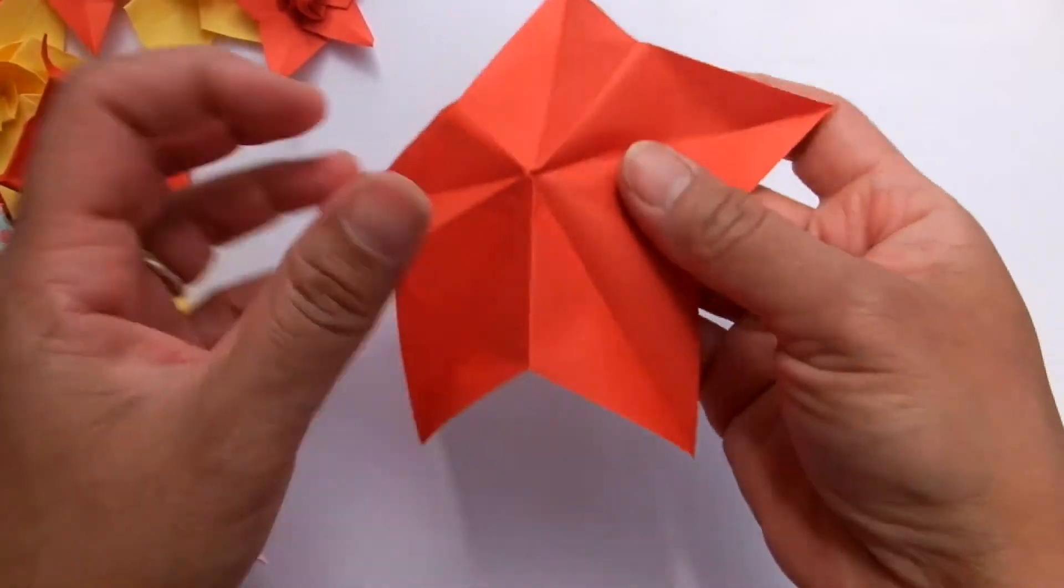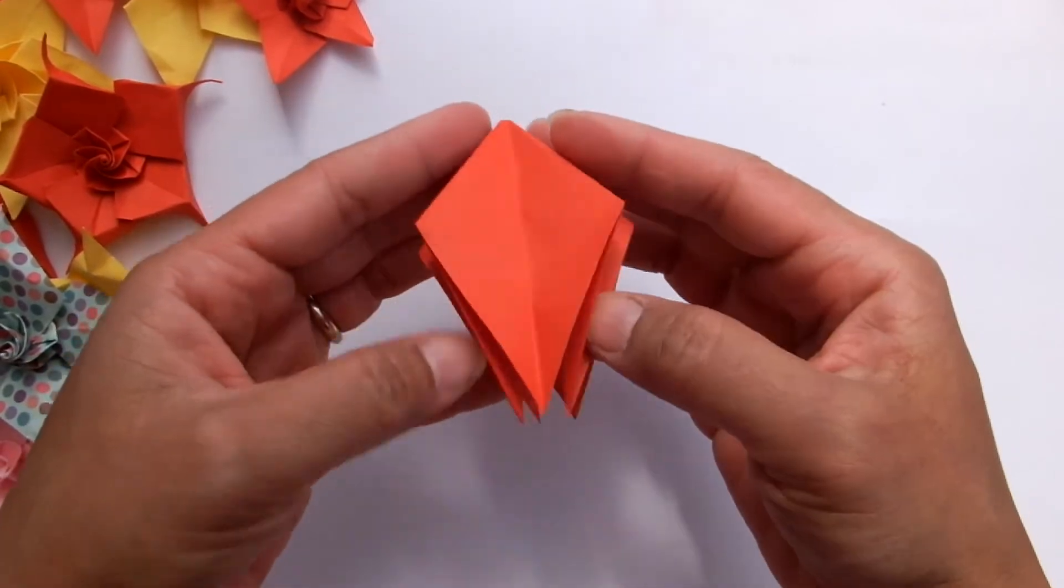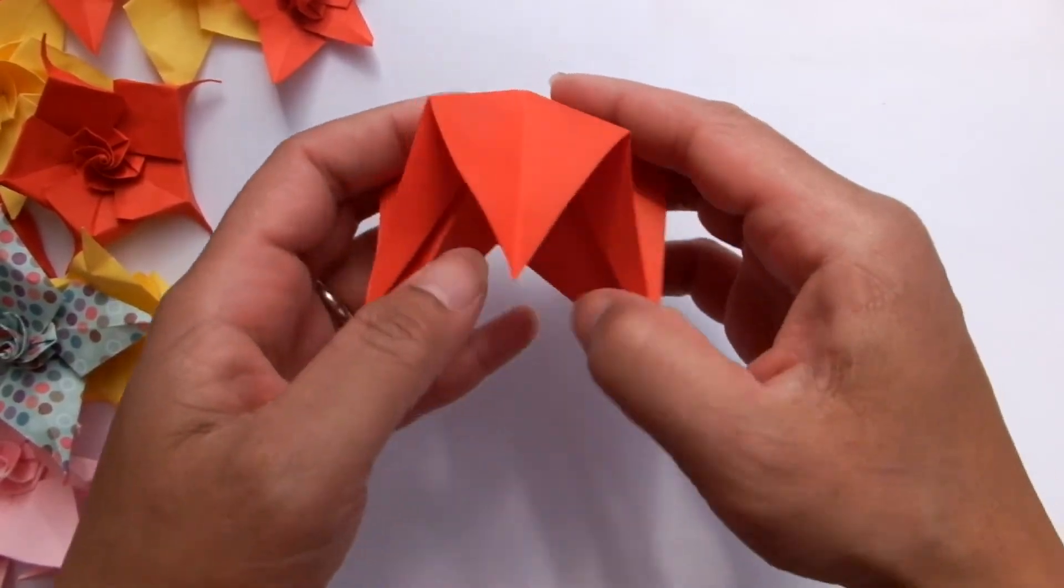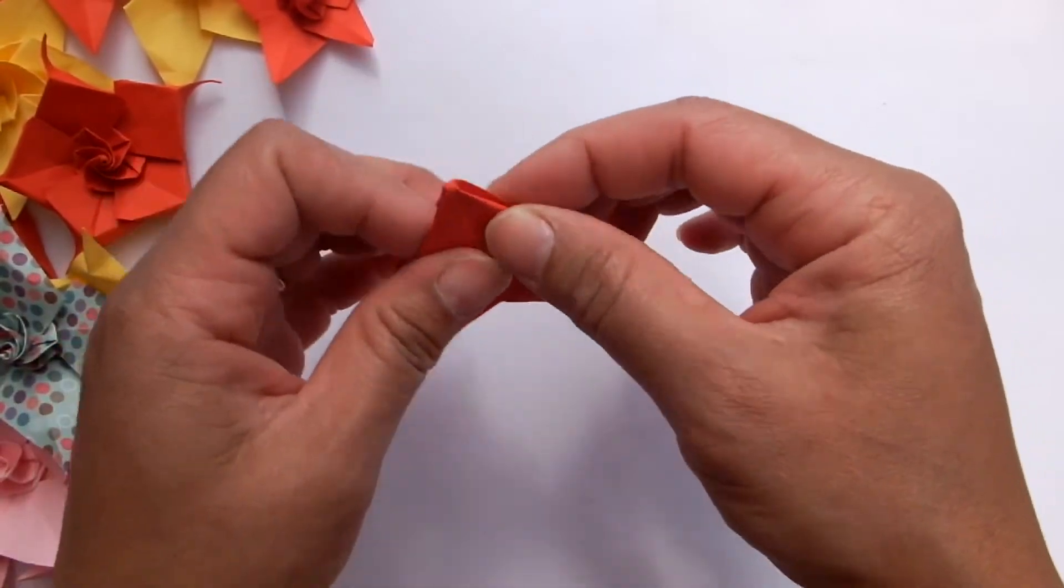If you get this shape, don't worry. Just flip the paper and pop it and then you got the shape we need.